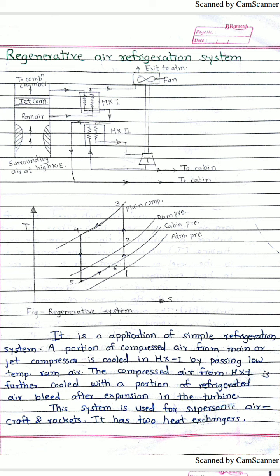We are using two heat exchangers: heat exchanger one and heat exchanger two. The high-pressure, high-temperature compressed air passes through heat exchanger one, where it acts as the hot fluid. Simultaneously, the bypassed ram air passes through heat exchanger one as the cold fluid, so its temperature increases while the compressed air temperature decreases. The heated ram air then goes to the circulation fan and is rejected to the surroundings.